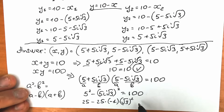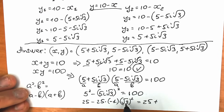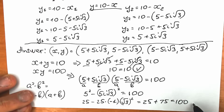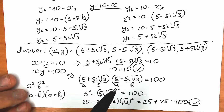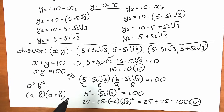That gives 25 plus 75, which equals 100. The product checks out perfectly. Both addition and multiplication are verified — our roots are correct.